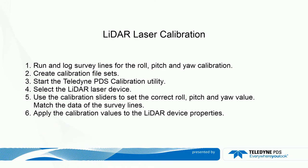The steps to calibrate the mounting angles of the LIDAR laser are: record survey lines; sail for each mounting angle a specific survey line along an object; create a file set of the survey lines used for the mounting angle calibration; start the PDS calibration utility; select the LIDAR device to calibrate; calibrate the roll, pitch, and yaw mounting angles by moving sliders; adjust the sliders so the data of the logged survey lines matches; and finally apply the angle calibration values to the LIDAR PDS device properties and run your LIDAR laser survey.